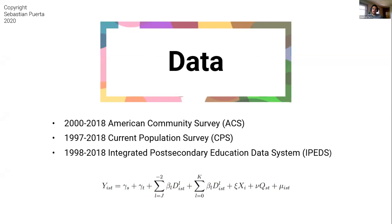The specification I run is shown here. In most cases, the outcome is college attendance for an individual i in state s at time t. I have state fixed effects and time fixed effects. Most of my specifications are event studies, so I've modeled my specification accordingly. Most importantly, what you care about is beta-l: when l equals zero, the policy takes place in year zero with effects relative to year minus one, which is the year I've left out. I've added a battery of individual controls in Xi, and various time-varying and permanent state controls in the Q variable.